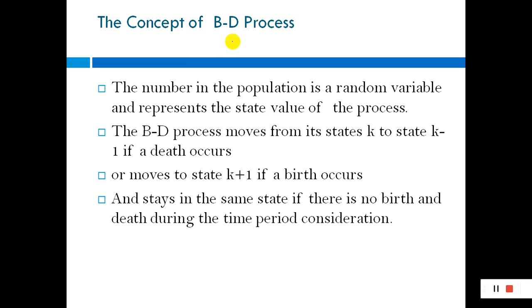The BD process moves from its current state k to state k+1 if a birth occurs, or to state k-1 if a death occurs. So if the current state is k and a death occurs, it moves to k-1; if a birth occurs, it moves to k+1. It stays in the same state if there is no birth and no death.